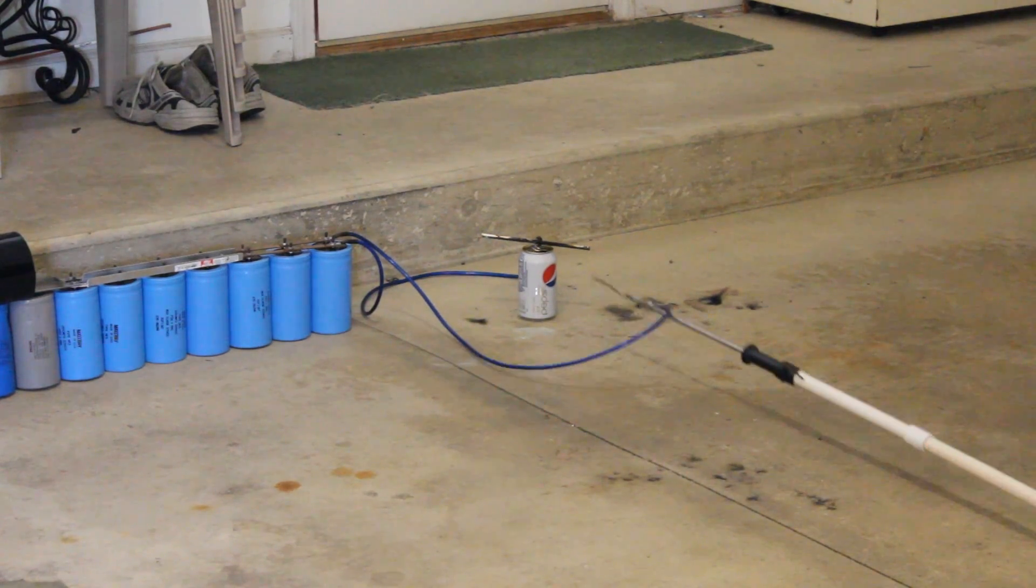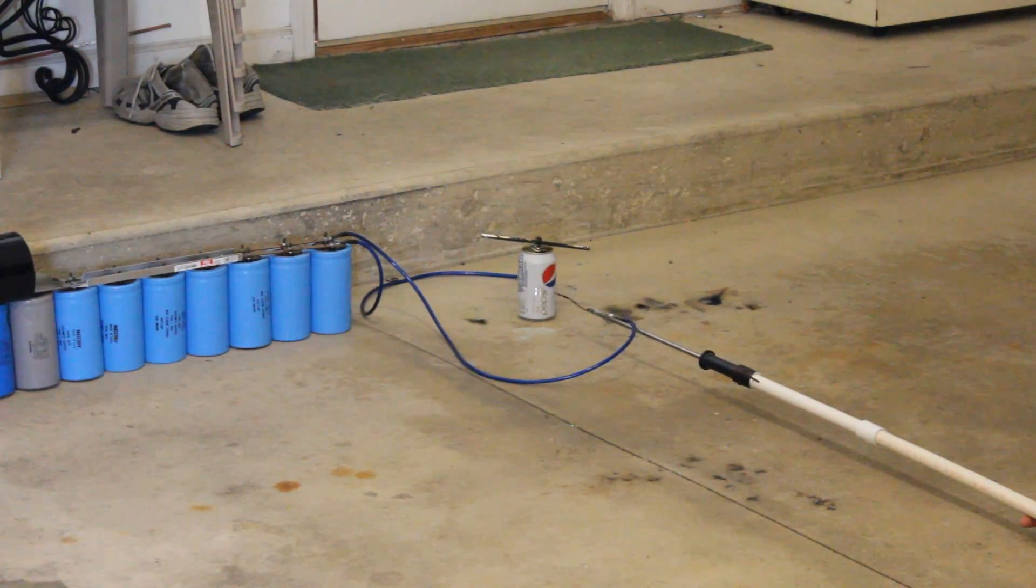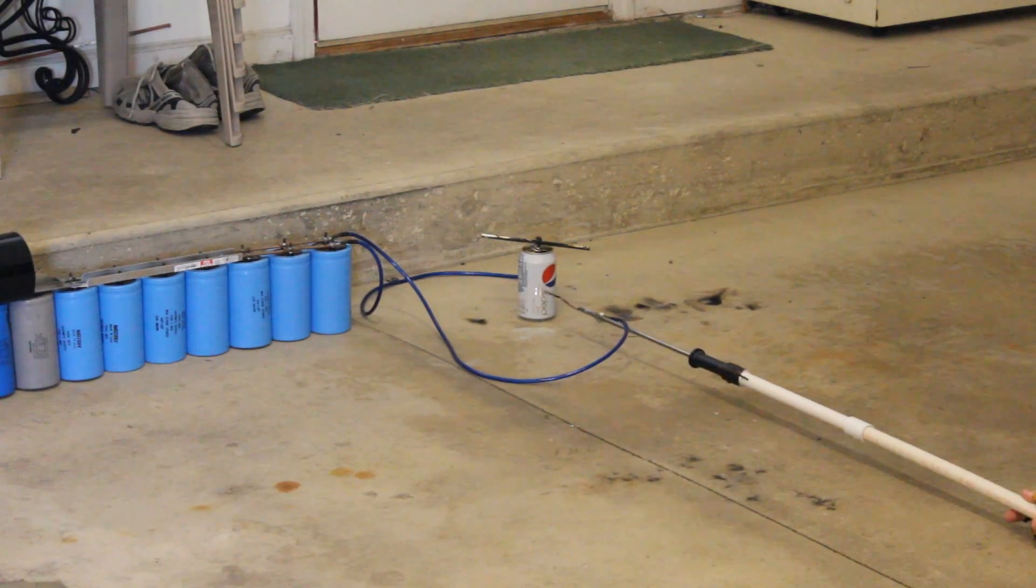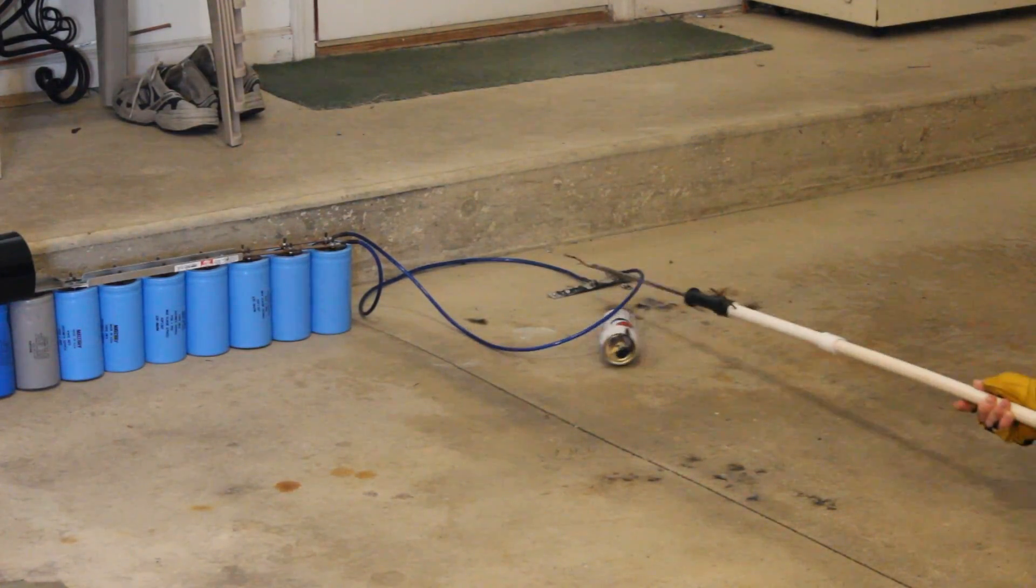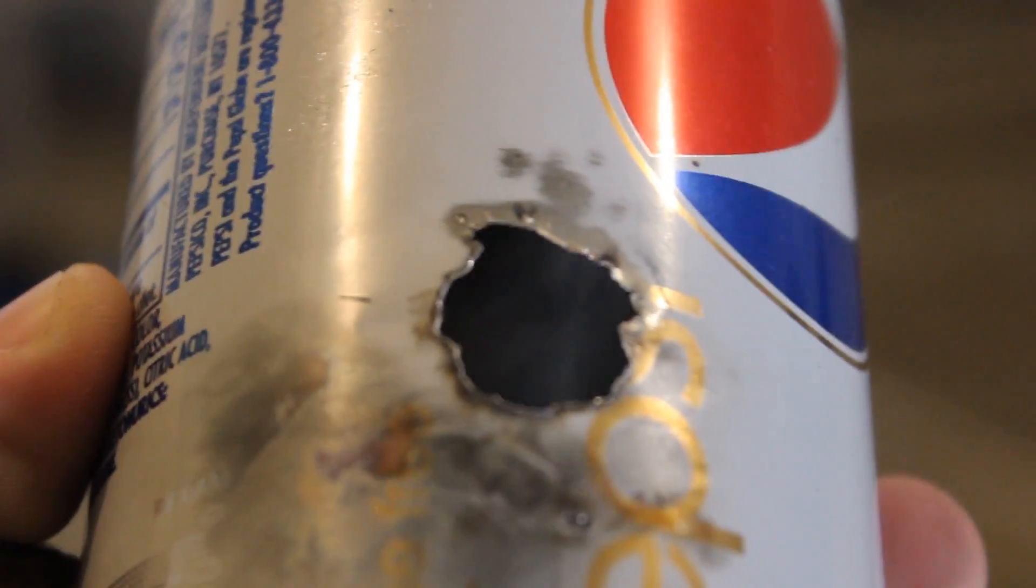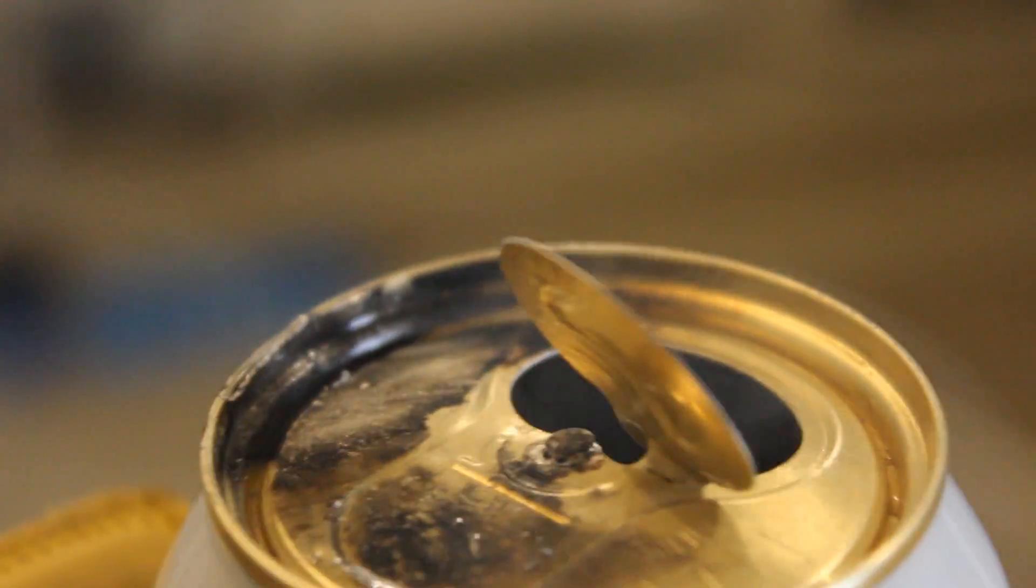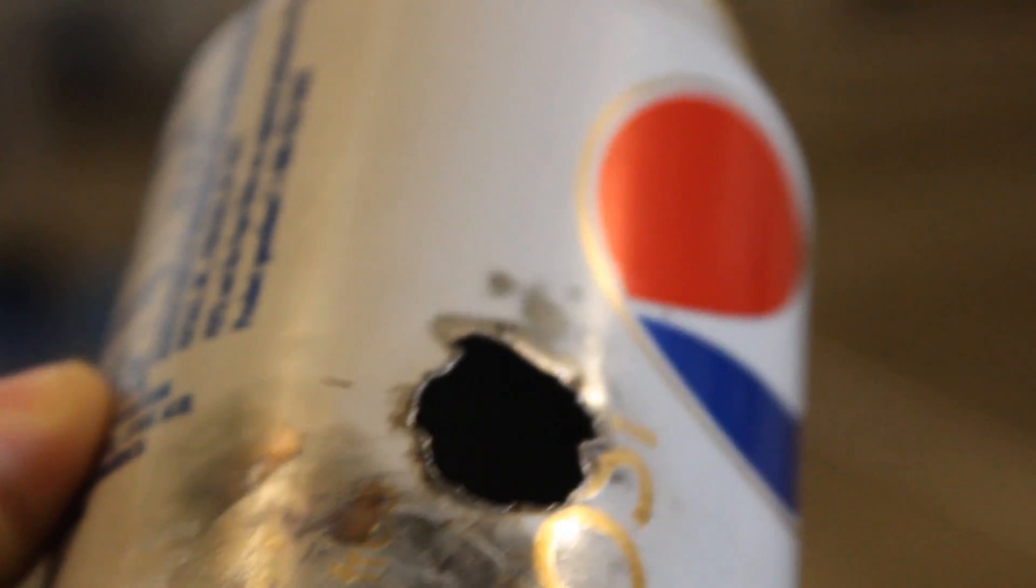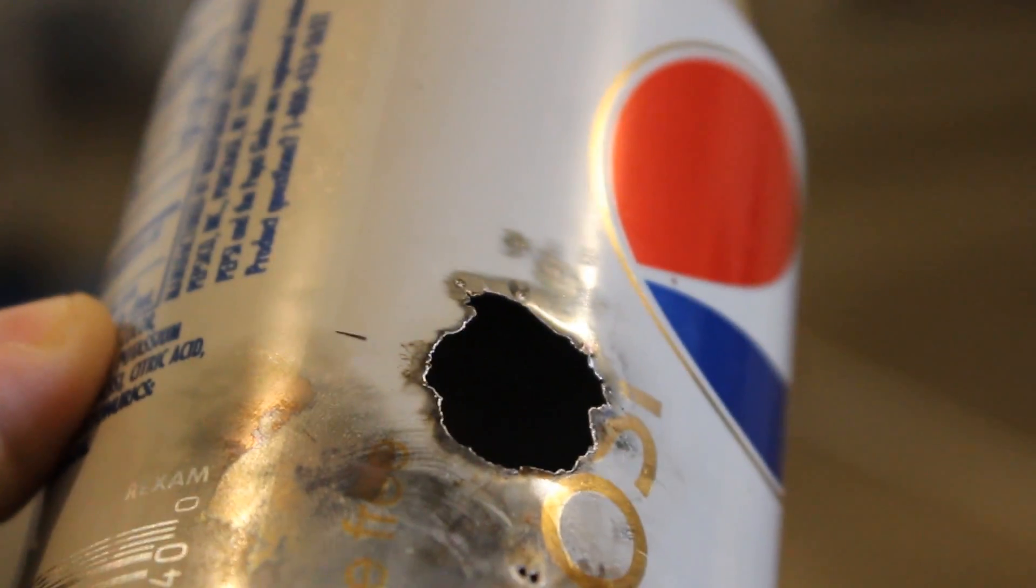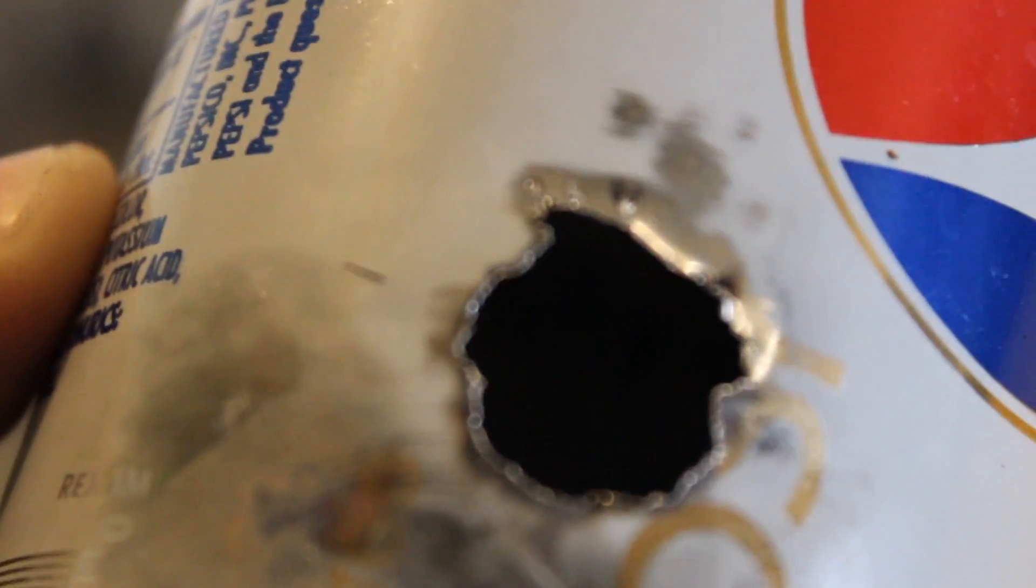So discharging full bank to a soda can with a scrape on the side. 3, 2, 1. Here is the soda can. Aluminum dust pouring out of it like crazy. The lid literally exploded outwards. It was on the inside of it obviously, because I'm not that talented. So that's what happens when you discharge 2 kilojoules to a soda can. I can only imagine if that was your finger.